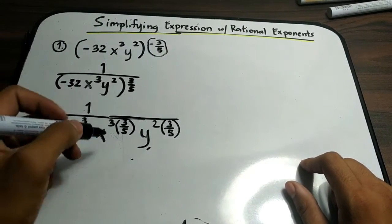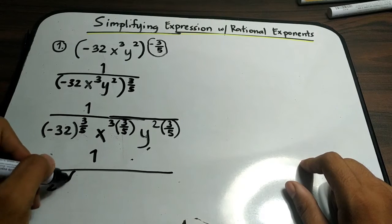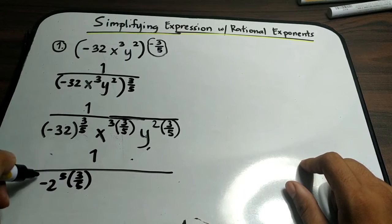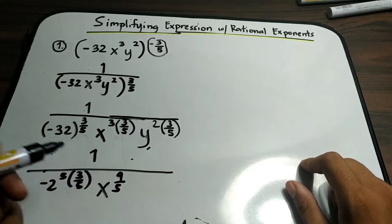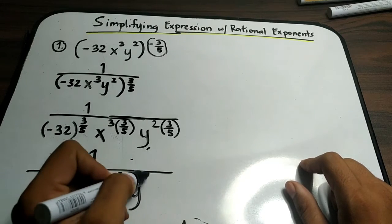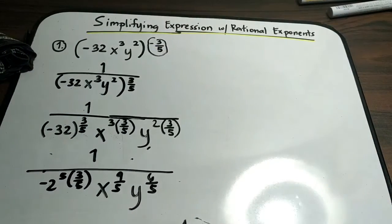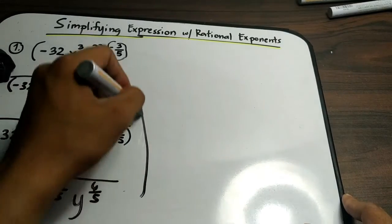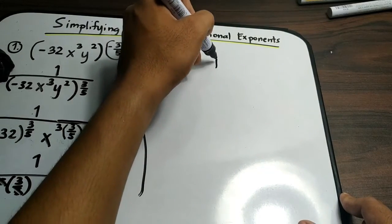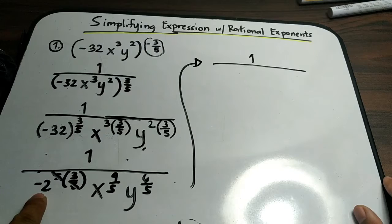I forgot the numerator — so this is 1 all over negative 2 raised to 5 times 3 over 5, and then x raised to 9 over 5, and y raised to 6 over 5. Now we can simplify this: the exponents of negative 2 — you can cancel out 5 and 5 — so the remaining expression is 1 all over negative 2 raised to 3.